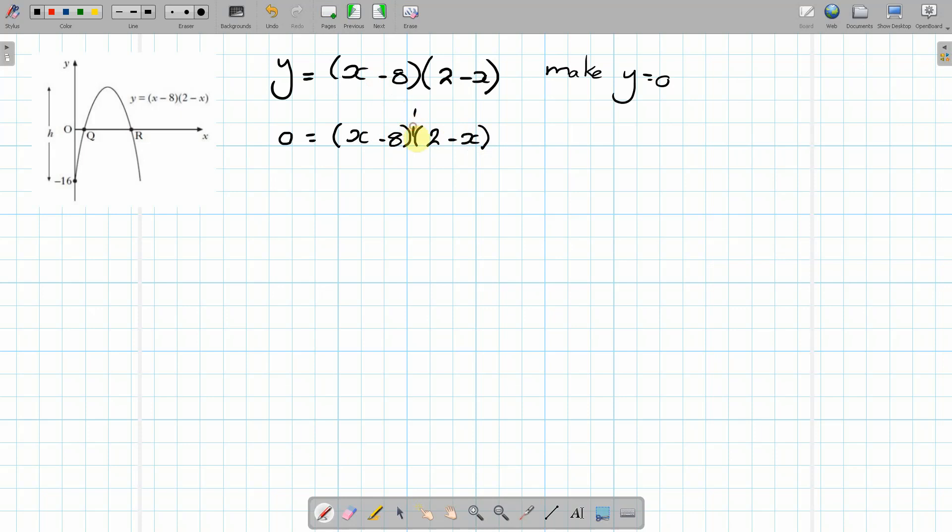Now if we split these two brackets apart, we get x minus 8 equals 0 or 2 minus x equals 0. So x will equal 8 or minus x will equal minus 2, so x will equal 2.